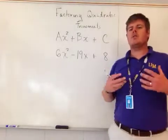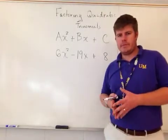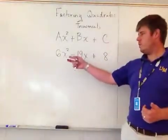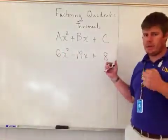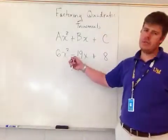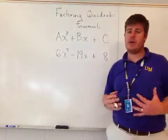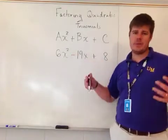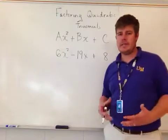To start this factoring problem, we take the leading coefficient and multiply it by the constant. But before we do that, we check to see if there's a GCF we can factor out. Looking at 6x² - 19x + 8, there is no GCF, so we use the AC method as is.